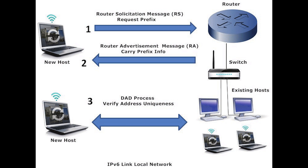Stateless address auto-configuration is the process that IPv6 nodes, hosts, or routers use to automatically configure IPv6 addresses for interfaces. The node builds various IPv6 addresses by combining an address prefix with either an identifier derived from the MAC address of the node or a user-specified interface identifier. The node performs duplicate address detection to verify the uniqueness of the address before assigning it to the interface.